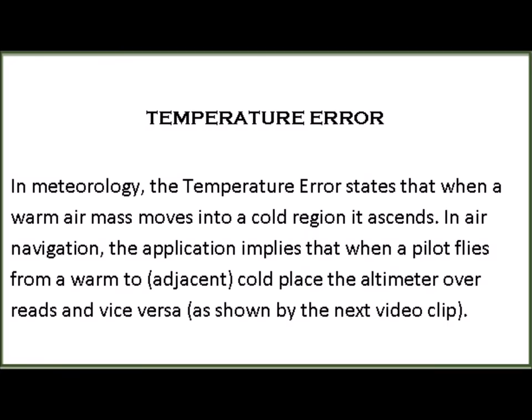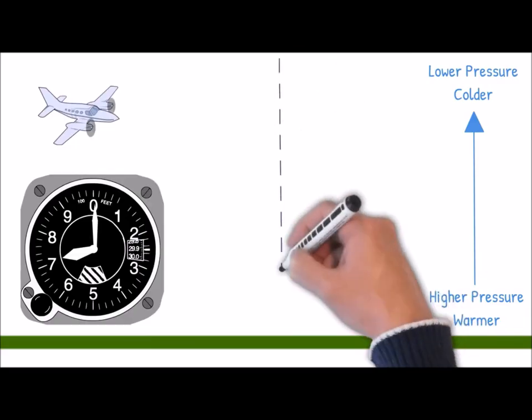Temperature error. In meteorology, the temperature error states that when a warm air mass moves into a cold region, it ascends. In air navigation, the application implies that when a pilot flies from a warm to a cold place, the altimeter overreads, and vice versa, as shown by the next video clip.